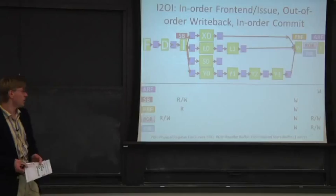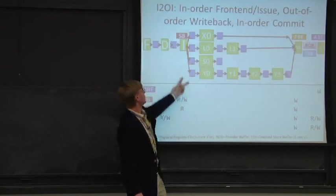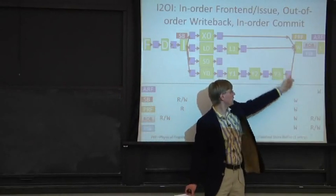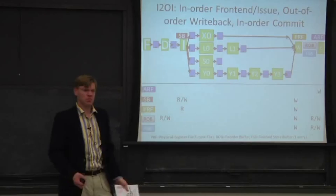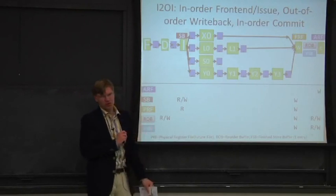Let's talk about where things get read and written. Interestingly, the architectural register file isn't read anywhere in the normal flow. We use the physical register file for all intermediate values in the pipeline. The architectural register file is only needed if we take a branch or interrupt — that's when we copy it into the physical register file. The scoreboard is the same as usual: read and written in the register fetch stage, written at write back. It's now tracking physical register file registers, not architectural register file registers.